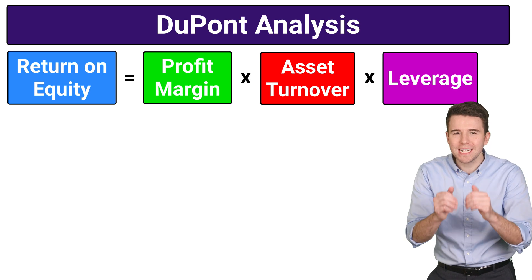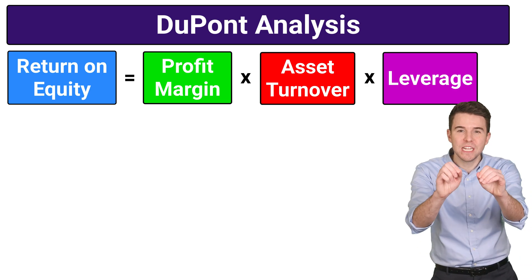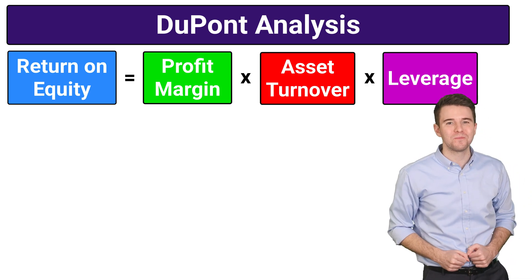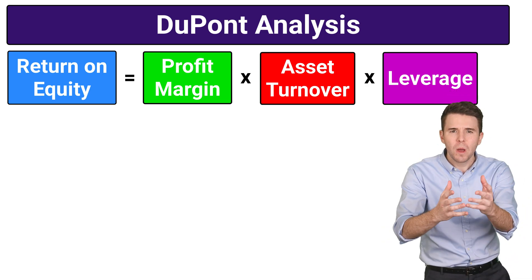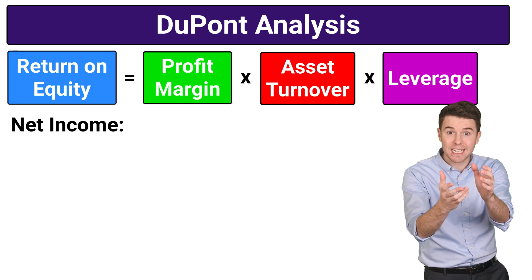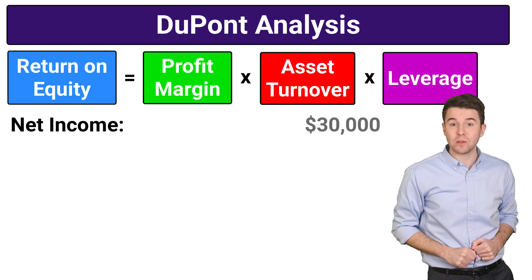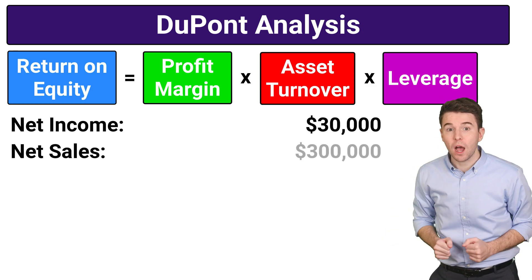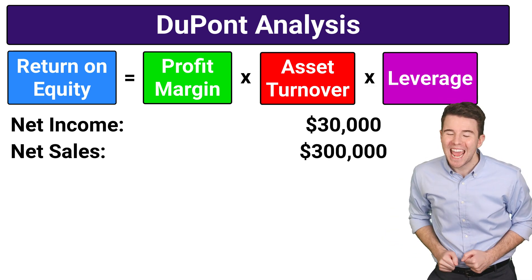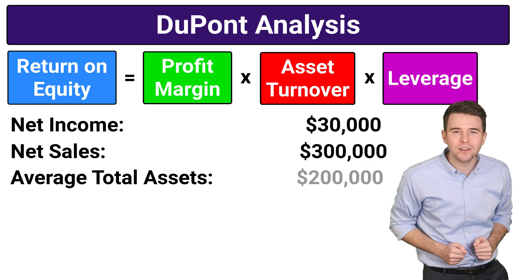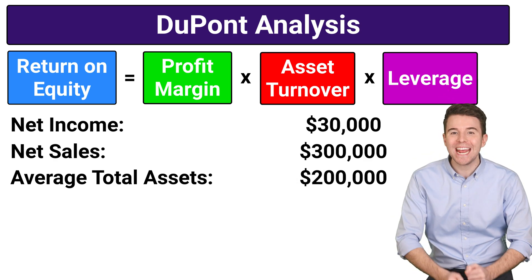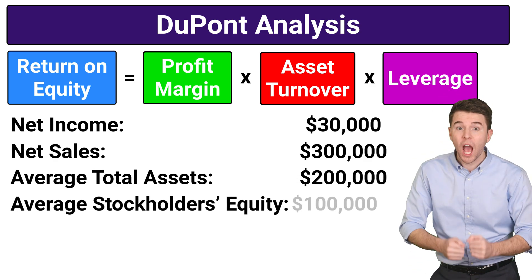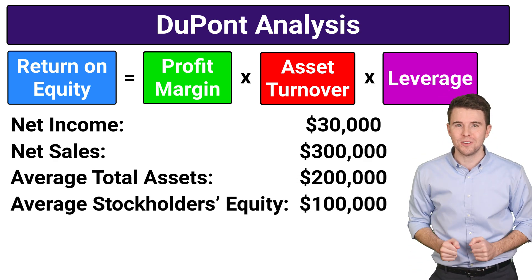Now let's put DuPont Analysis into practice using an example. Assume a company reports net income of $30,000, net sales of $300,000, average total assets of $200,000, and average stockholders' equity of $100,000.